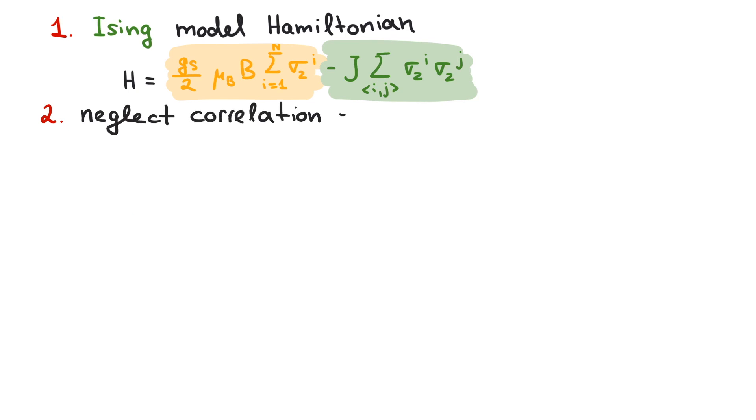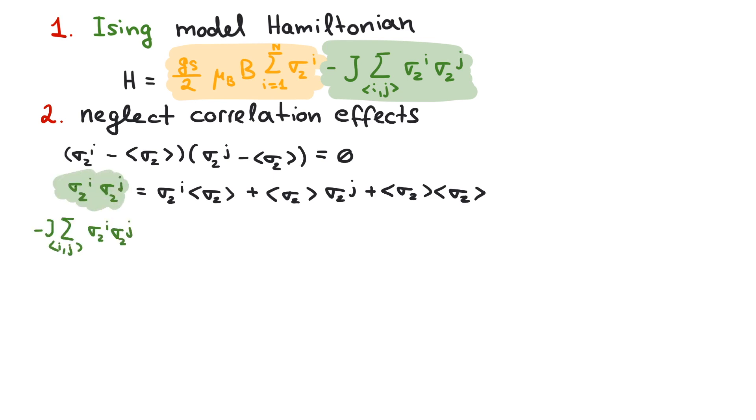The second step is to neglect correlation effects. That is, fluctuations at site I do not cause fluctuations at the neighboring sites. What we call fluctuations is the difference of sigma I from the thermal expectation value of sigma. That average, of course, doesn't depend on the specific site. We expand the expression and plug our assumption into the interaction term of the model Hamiltonian.